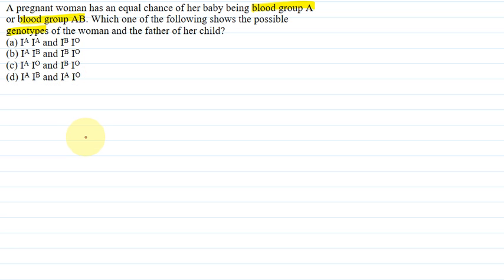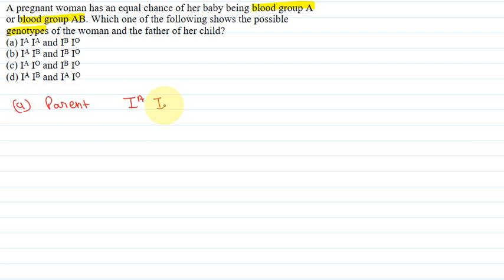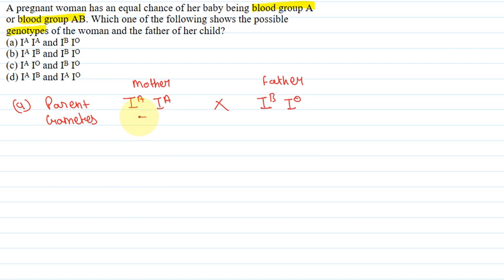So here we have the genotypes of parents, and we have to determine the possible outcome where the baby's blood group is either A or AB. Let's look at these four options and cross them to find the answer. In option A, we have the parent IA, IA crossed with IBIO. The gametes will be IA and IA crossed with IB and IO.